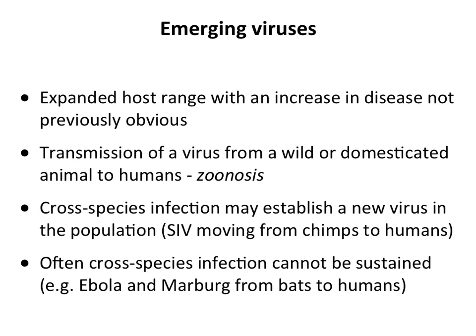An emerging virus can be one of two things: an expanded host range of an existing virus that becomes suddenly obvious, or the transmission of a new virus from wild or domesticated animals to humans — called a zoonosis. Influenza was technically a zoonosis at some point, and every fresh influenza virus from animals is a zoonosis. The jump of HIV from chimps to humans was also a zoonosis; now HIV is a human virus.